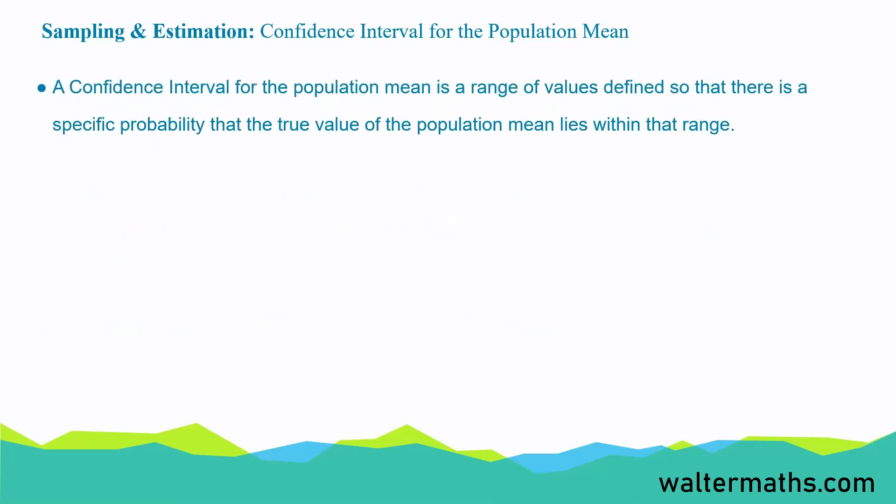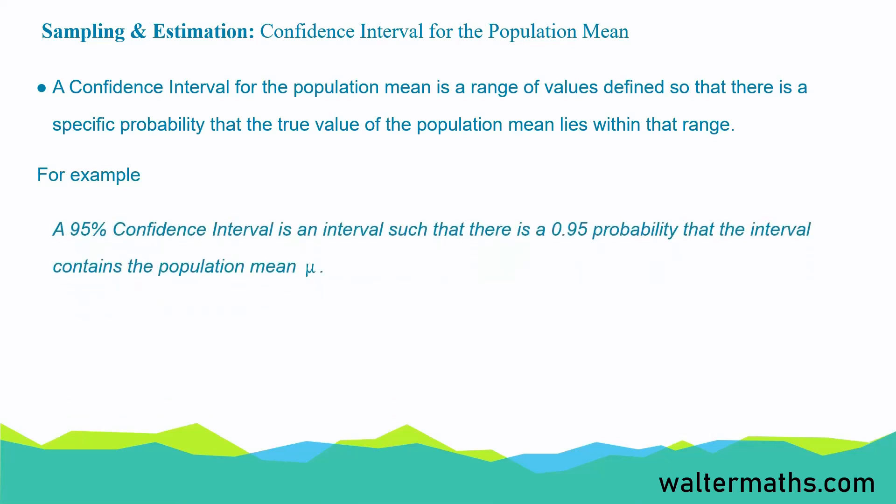Now, a confidence interval for the population mean is a range of values defined so that there is a specific probability that the true value of the population mean lies within that range. For example, a 95% confidence interval is an interval such that there is a 0.95 probability that the interval contains the population mean.